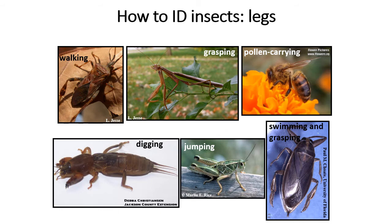The legs of many insects have been modified to be especially useful in the habitat where the insect lives or for helping obtain food. Walking legs are the least modified and are used for walking or running. The praying mantis gets its name from its front legs, which make it appear as though the insect is praying — those front legs are actually modified to grab and hold onto prey. Many bees have a special part in their legs that they use to carry pollen collected from flowers. Insects that live underground often have legs modified for digging, like the mole cricket. Most of us are familiar with legs modified for jumping — grasshoppers use jumping to escape predators and move quickly through their environment. Many insects also live underwater, like the giant water bug, and these insects have legs modified for swimming.